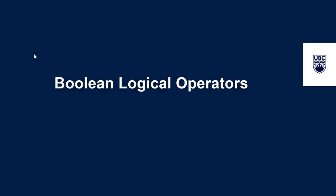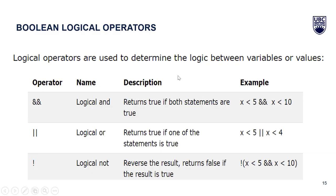Now let's talk about Boolean logical operators. Logical operators are used to determine the logic between variables or values. Logical AND returns true if both statements are true. Logical OR returns true if one of the statements is true. Logical NOT reverses the result — it returns false if the result is true.